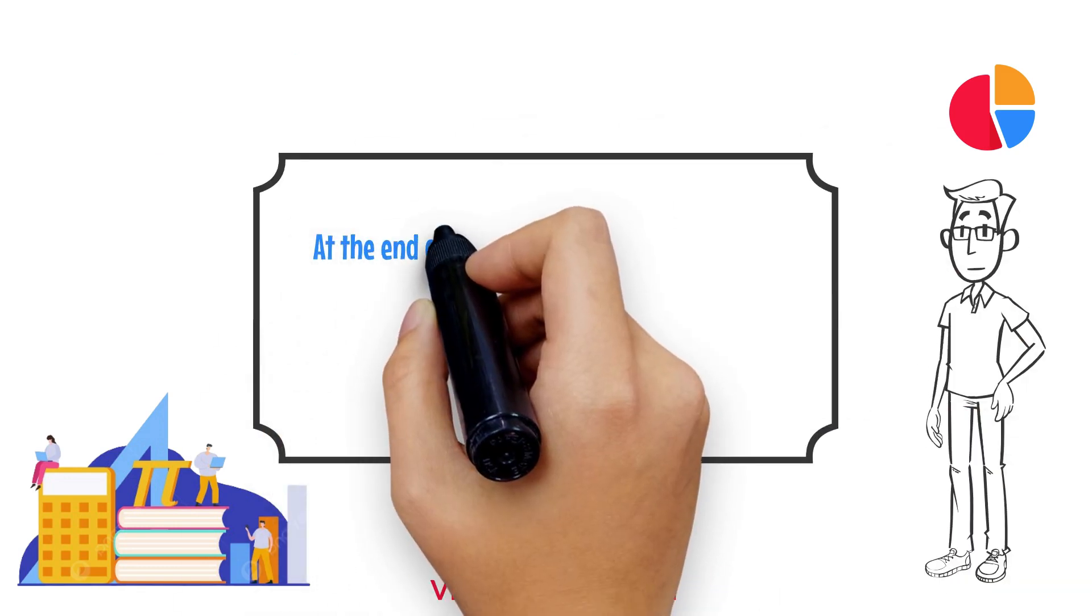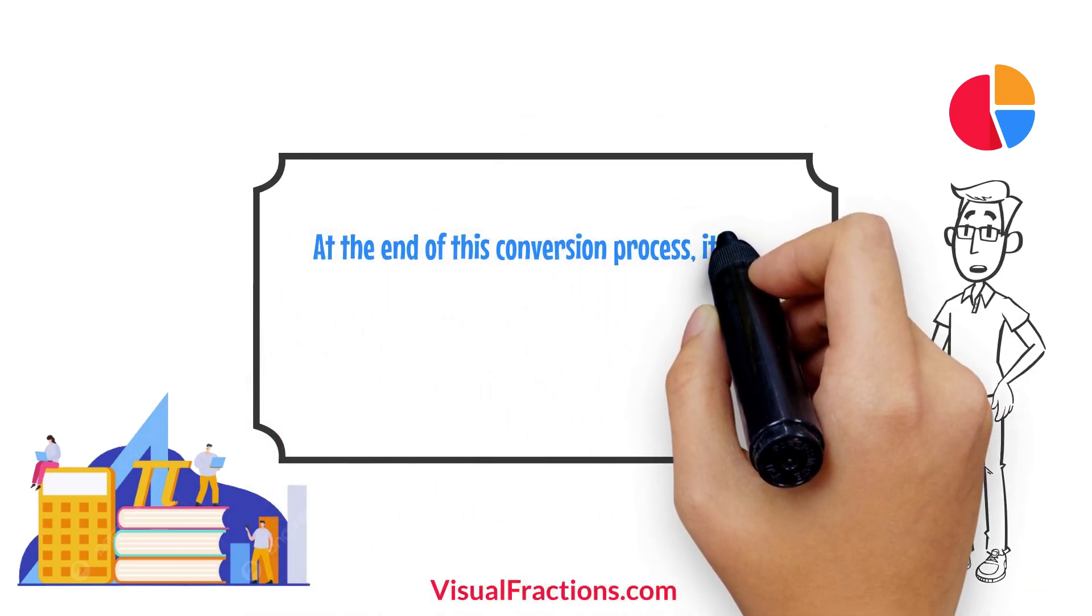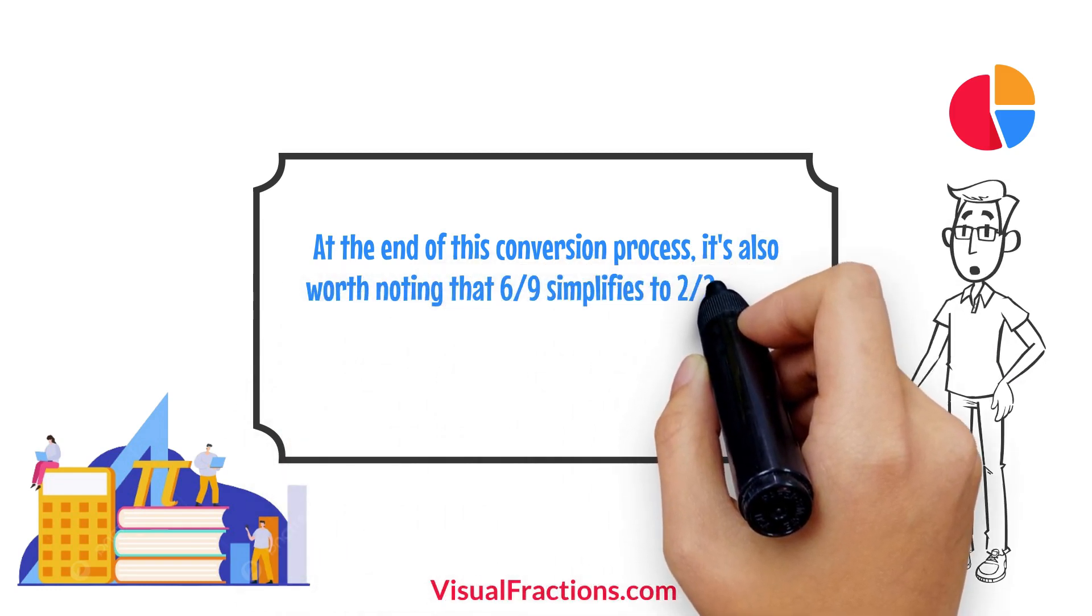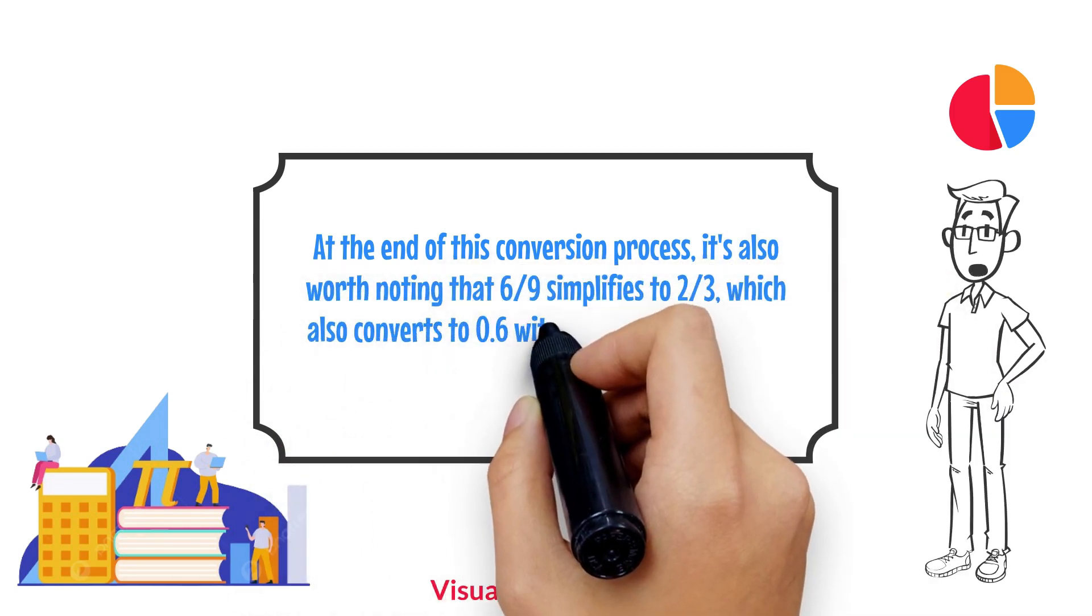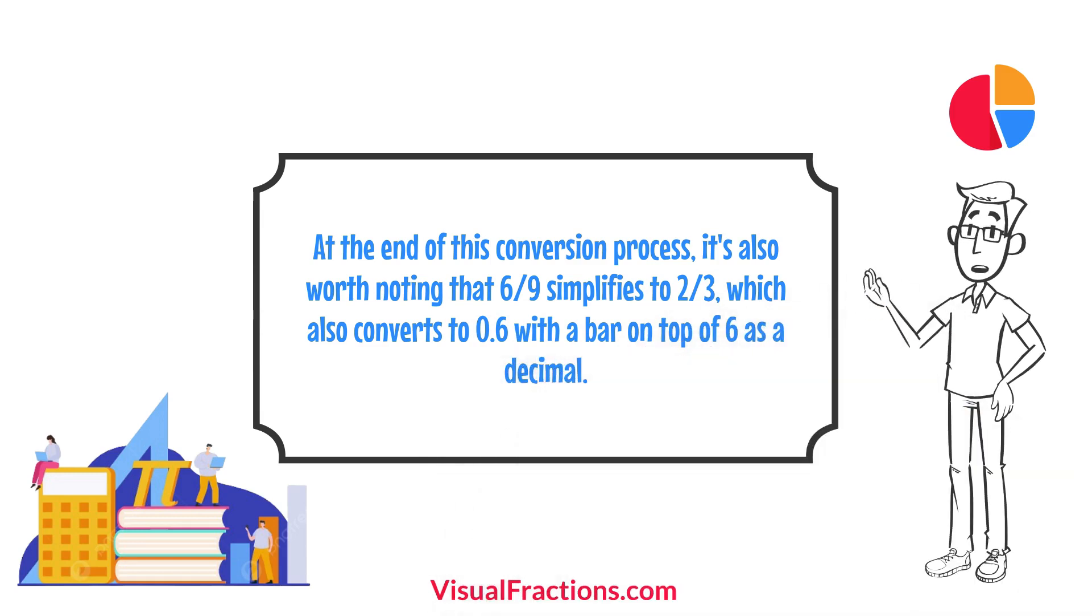At the end of this conversion process, it's also worth noting that 6 ninths simplifies to 2 thirds, which also converts to 0.6 with a bar on top of 6 as a decimal.